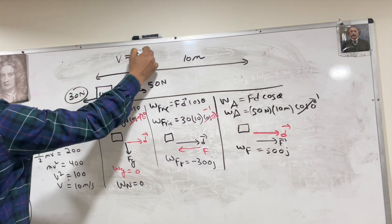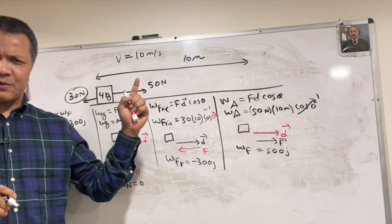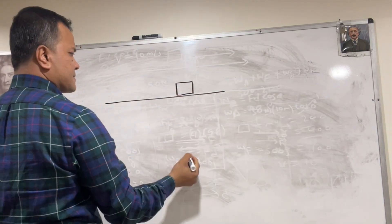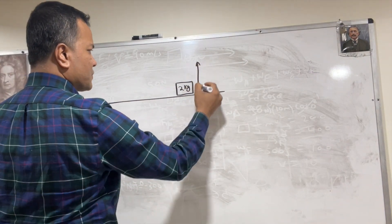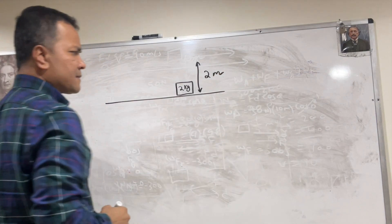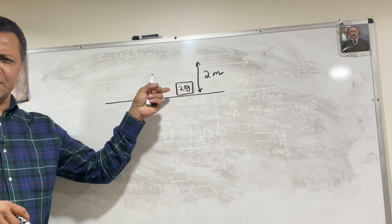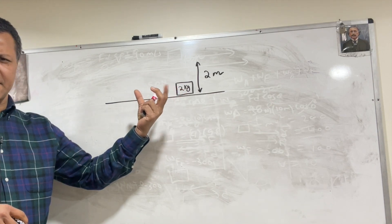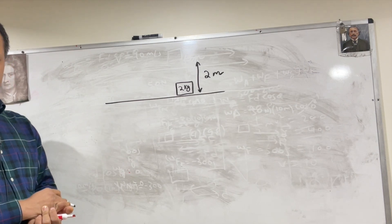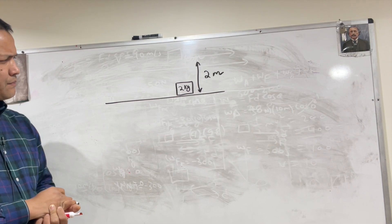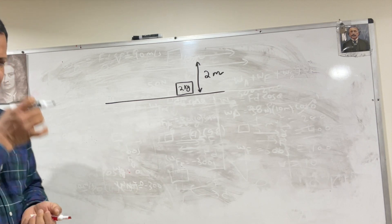Now instead of horizontal motion, we're going to consider vertical motion. Let's say a 2 kilogram object — you want to lift it 2 meters above the ground. What would be the work done on this object, and also the net work done on this object?